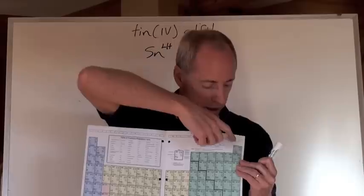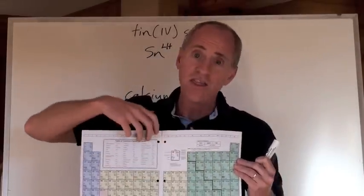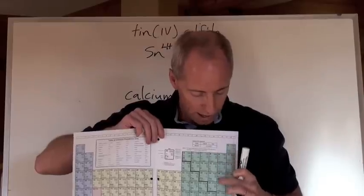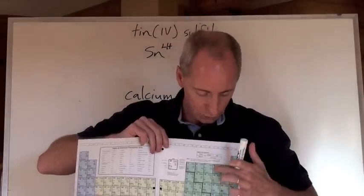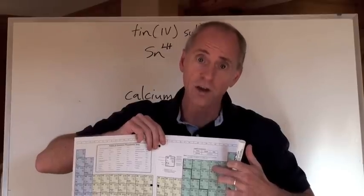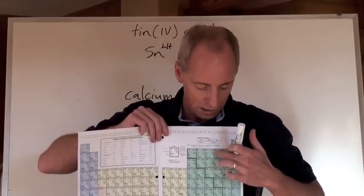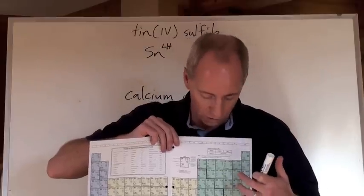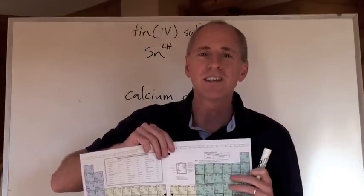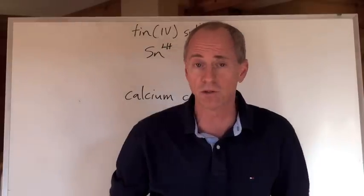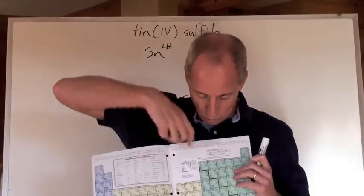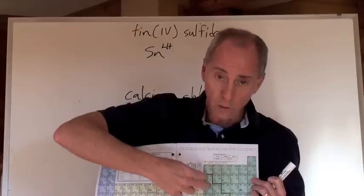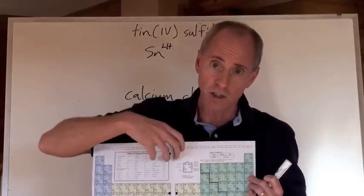By the way, the alkali metals are all +1. The alkaline earth metals are +2. All the transition metals could have more than one charge, so check to make sure. Ones like zinc and silver only have one charge, one ionic charge. The noble gases don't actually form ionic compounds at all—they have a charge of zero. All the halogens are -1, the oxygen group is all 2-. Nitrogen and phosphorus group are 3-. Carbon and silicon don't really form ionic compounds. But aluminum and gallium have 3+ charges.